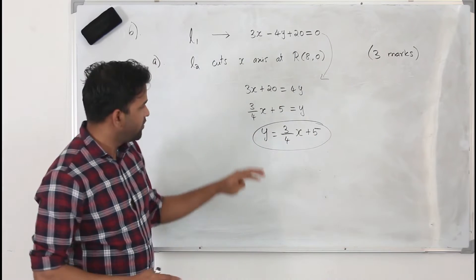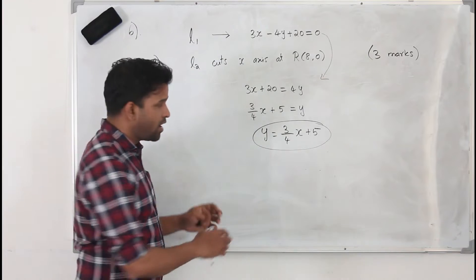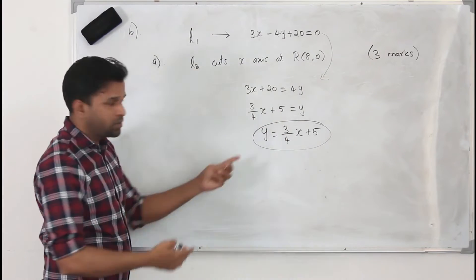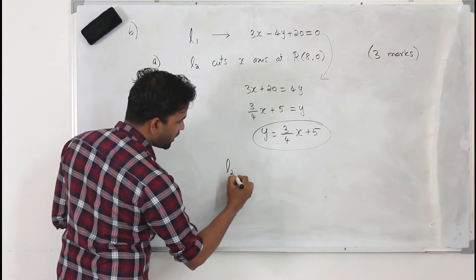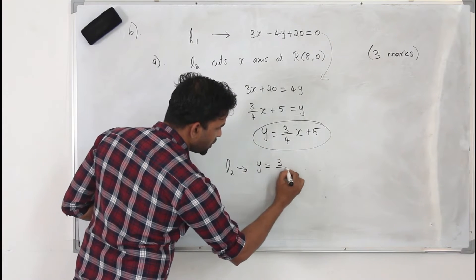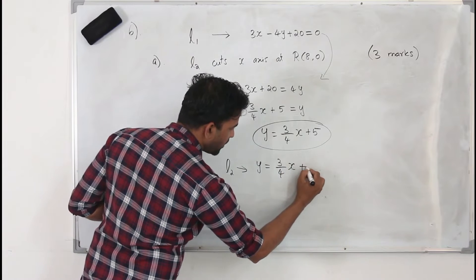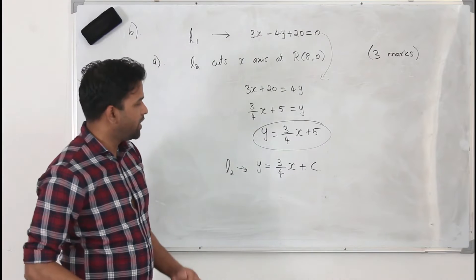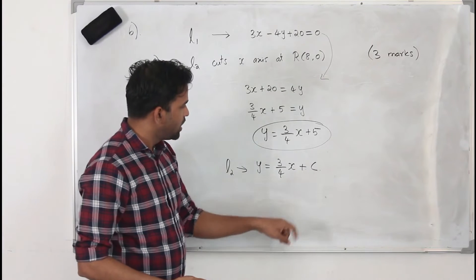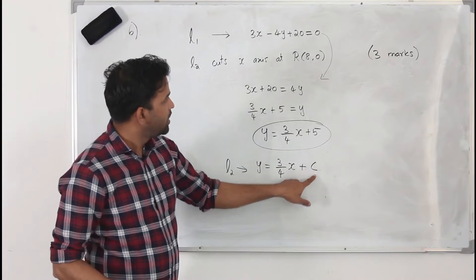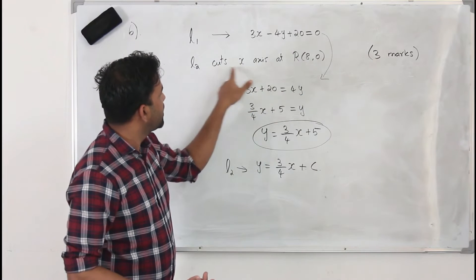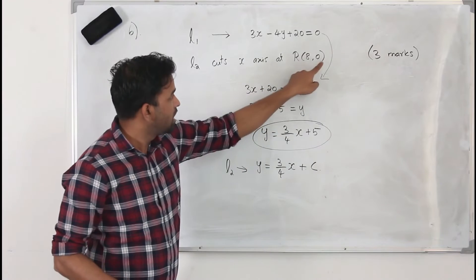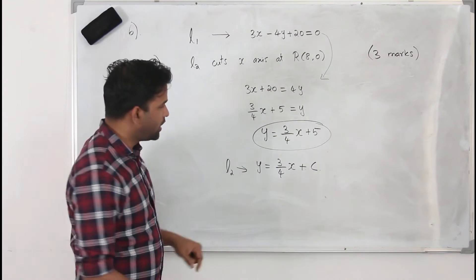Any line parallel to this will have the same gradient 3/4. Since L2 is parallel to L1, the equation of L2 will be y equals 3/4 x plus c. The gradient will be the same, but the y-intercept c will be different. We find c by substituting the given point R(8, 0): x equals 8 and y equals 0.